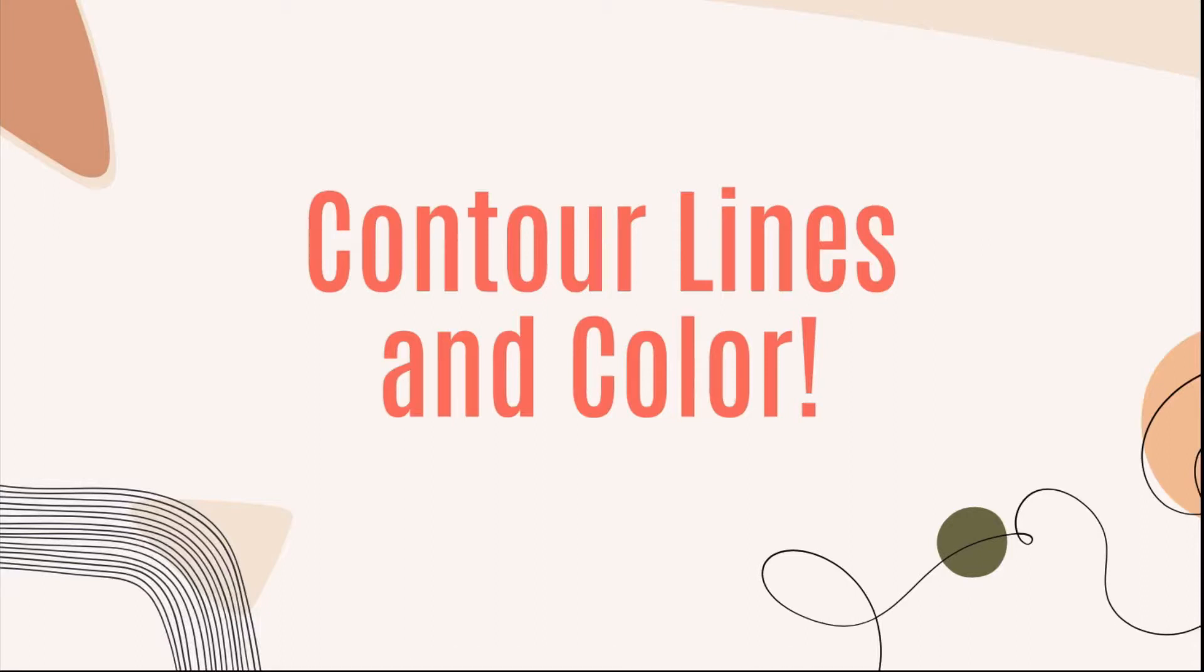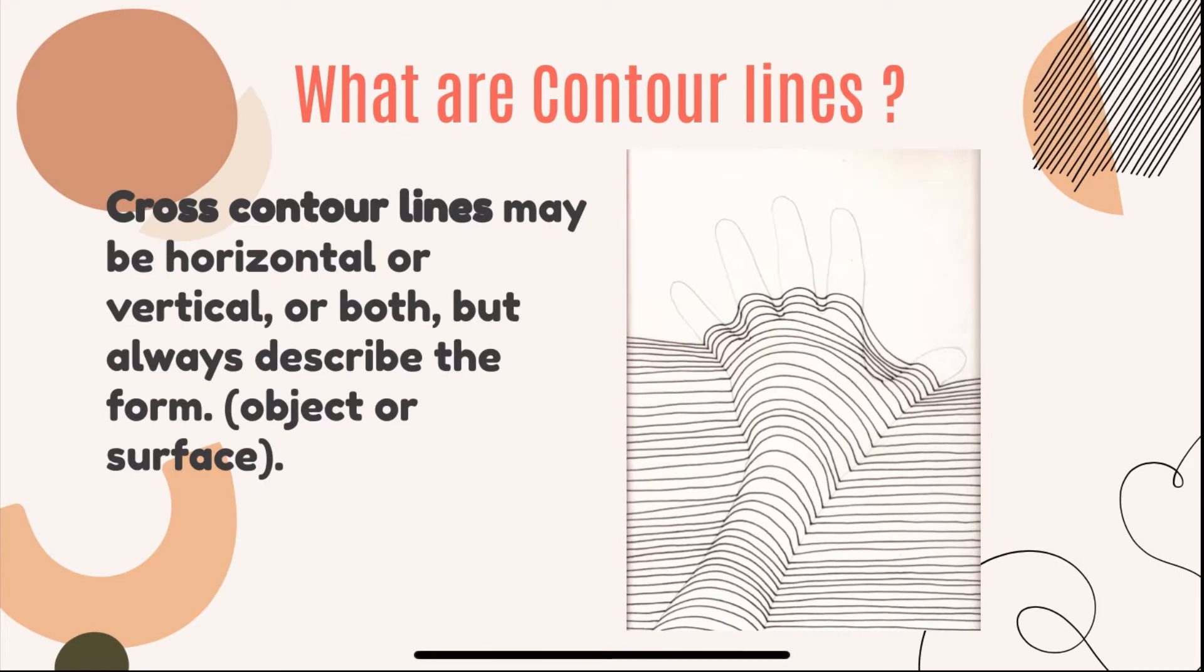Hello everyone, it's Miss Sim back with another video. Today we're learning about contour lines and color. So what are contour lines? Cross contour lines may be horizontal, vertical, or both, but they always describe a form. So it can be an object or surface. Here we have our hand, and here in the next slide we can look at these.